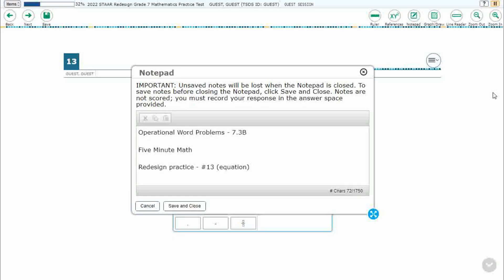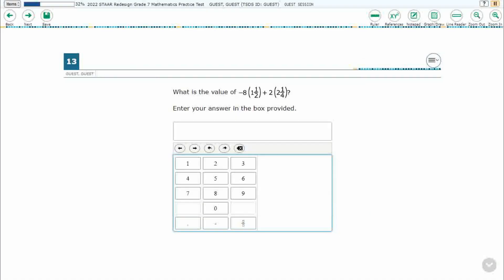This is standard 7.3b in the great state of Texas, and we are using item number 13, which is a new item type called equation of the Redesign Practice Online Star Test. If you haven't done so already, please go ahead and take a moment to pause the video.